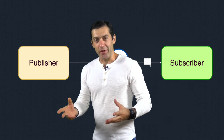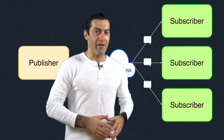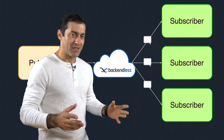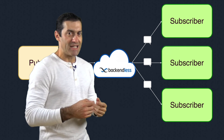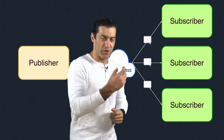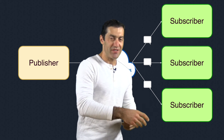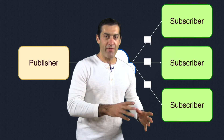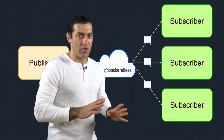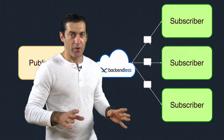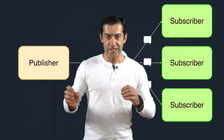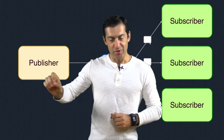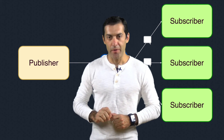In a real application, you would have more than one subscriber, because in a PubSub system the idea is that a message is sent once and delivered to multiple subscribers. However, the system does not preclude targeted delivery where you send a message to a specific subscriber.